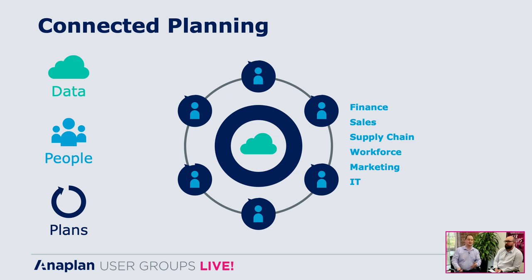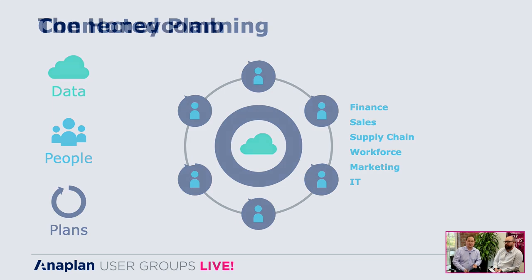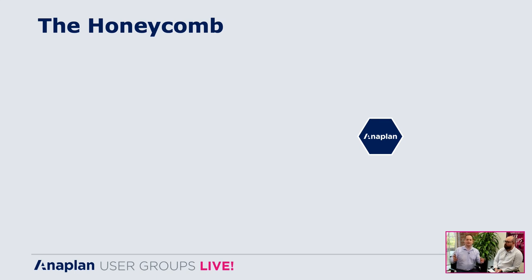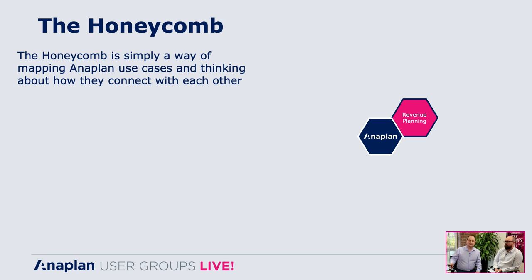So the title of this is 'what is the honeycomb?' — and I've not even mentioned honeycomb yet. That was really setting the scene of what we mean by use cases and connected planning, and that's where we can start to bring in this idea of the honeycomb. So what is the honeycomb? It's a simplified way of mapping your organization from a planning perspective, looking at the different processes that exist and mapping those into use cases connected together.